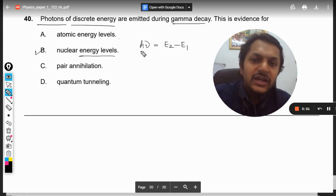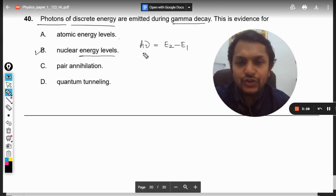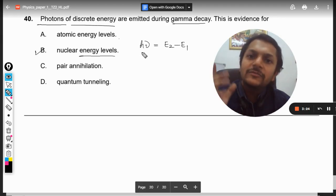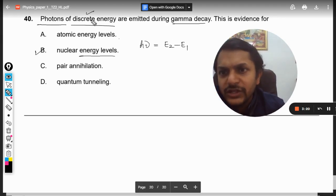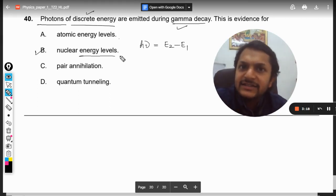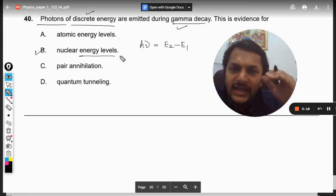...will be emitted in the form of photons of energy. Actually, one packet of energy, one photon, will be equal to E2 - E1. So from these two things we can say that yes, the nucleus is having nuclear energy levels.